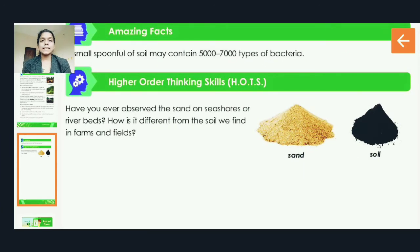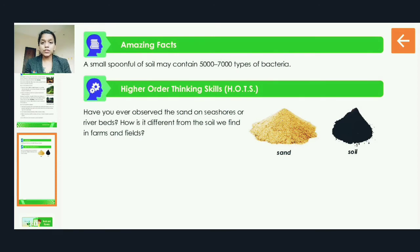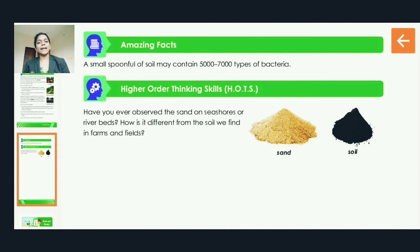In higher order thinking skills: have you ever observed the sand on seashores or river beds? How is it different from the soil we find in farms and fields? Sand is found mostly near riversides or sea beaches, while soil is formed in open lands or in farms. You should think about this and try to find out the difference between sand and soil.